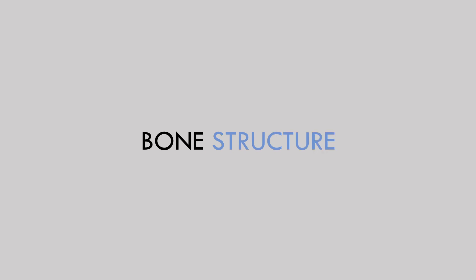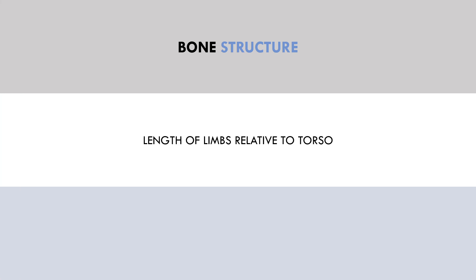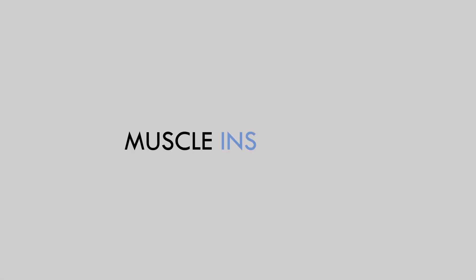The first anatomical factor that can influence strength is bone structure. The length of the limbs relative to the torso can influence strength by altering mechanical efficiency. For example, short femurs are beneficial for squatting strength, or long arms are beneficial for conventional deadlift strength.